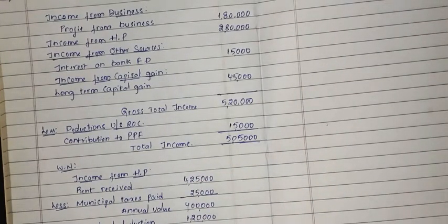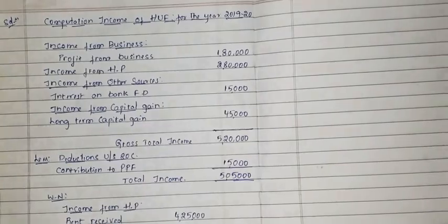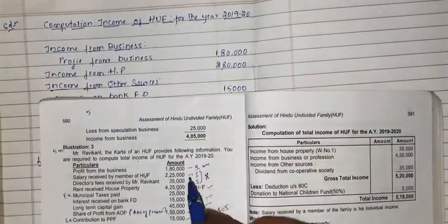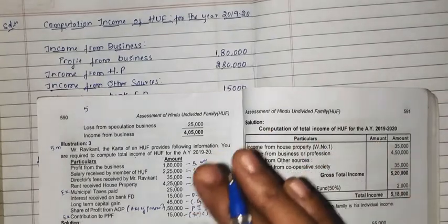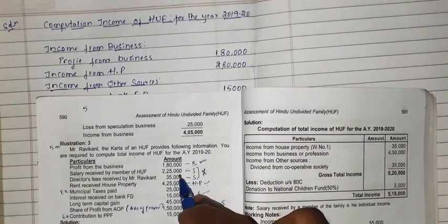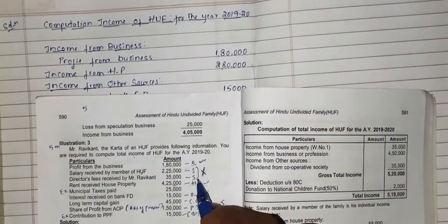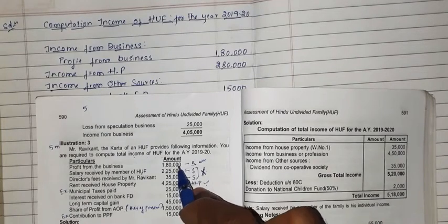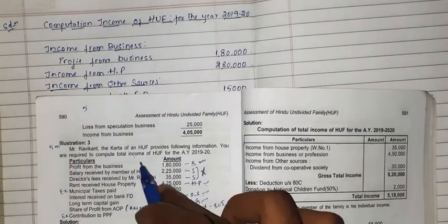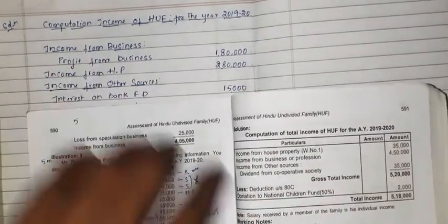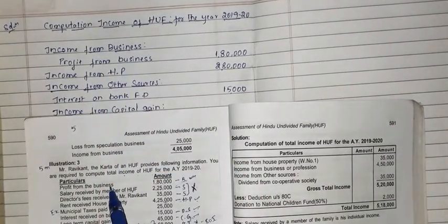This completes the computation of income of Hindu Undivided Family. As per the heads of income, the incomes are divided into income from business, income from salary, income from house property, income from other sources, and income from capital gain. Income from salary entries should not be taken in HUF income, so those are excluded.